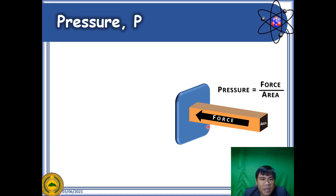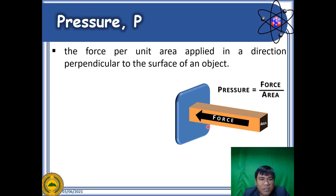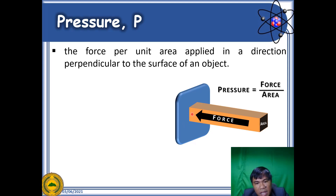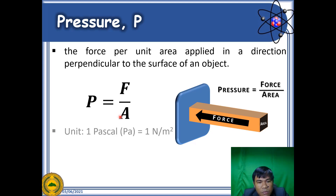Knowing that density affects pressure, we now look into the definition of pressure. Pressure is defined as the force per unit area applied in a direction perpendicular to the surface of an object. Here is our applied force to a certain surface, and pressure can be measured over this area — equal to the force exerted on the flat surface divided by that area. The SI unit for pressure is Newton per square meter, which is equal to Pascal.